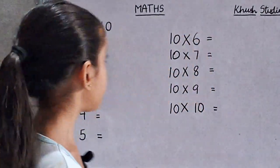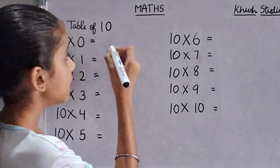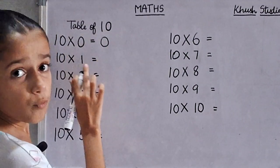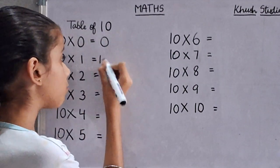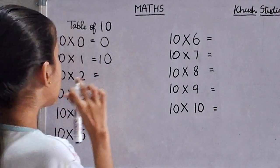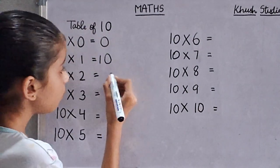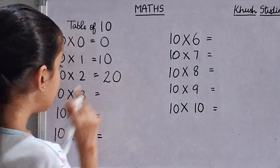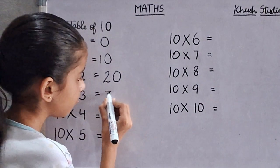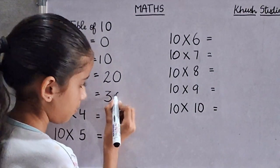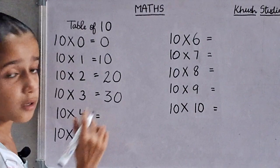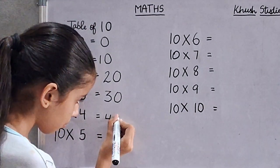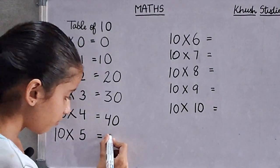So let's start. Ten zeros are zero. Ten ones are ten. Ten twos are twenty. Ten threes are thirty. Ten fours are forty. Ten fives are fifty.